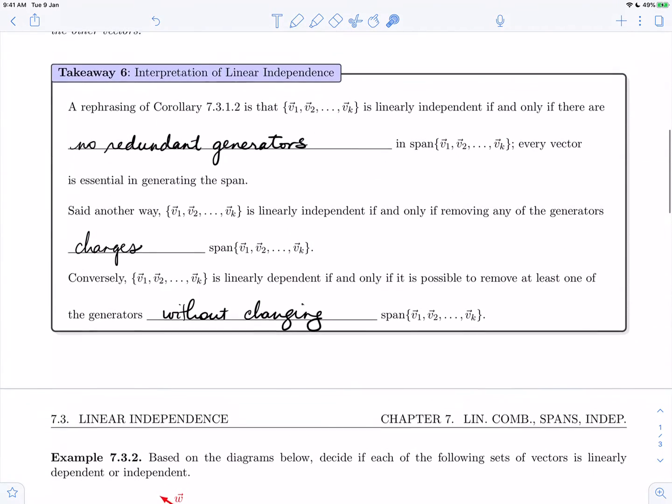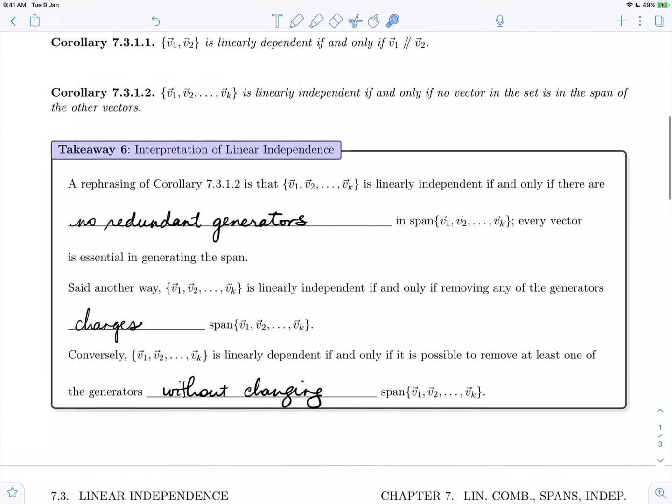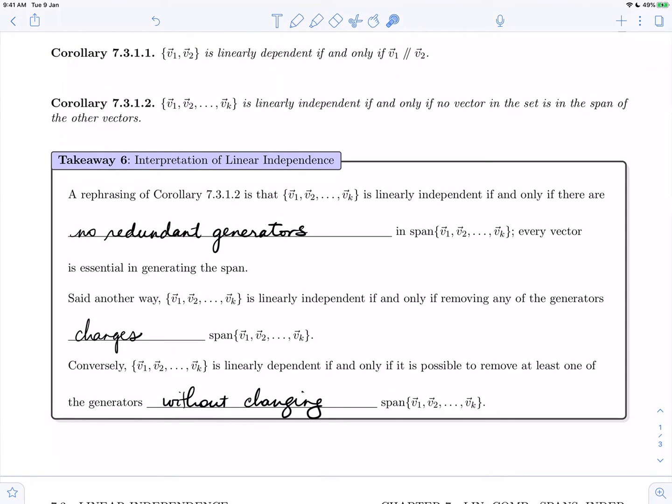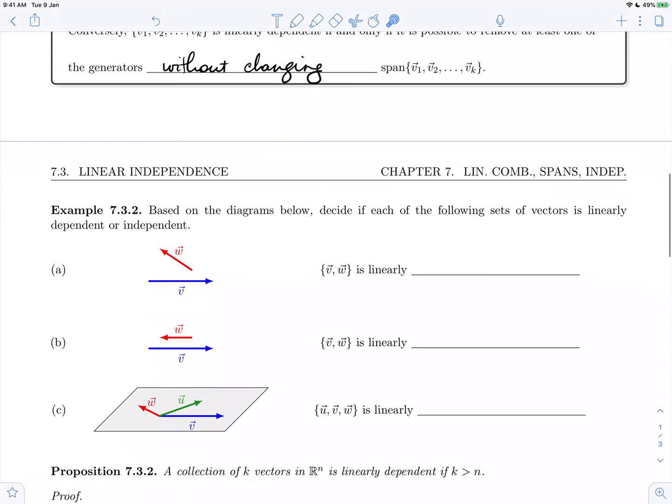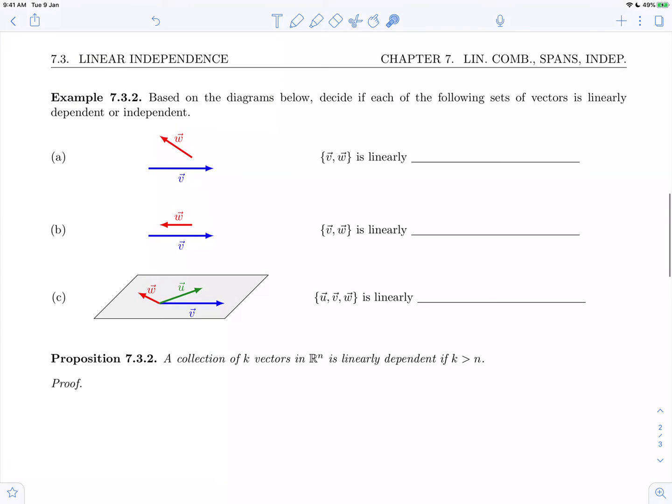In particular for the first two, for a and b, we're going to base ourselves on corollary 7.3.1.1 which says that a set of two vectors v1, v2 is linearly dependent if and only if v1 and v2 are parallel. So let's go back and look at a and b.